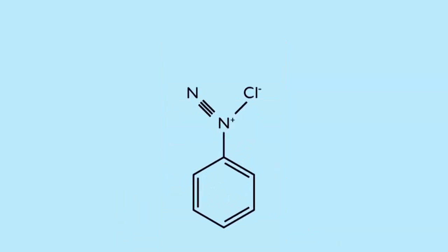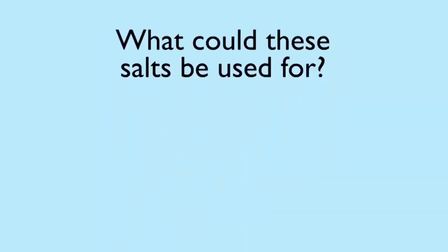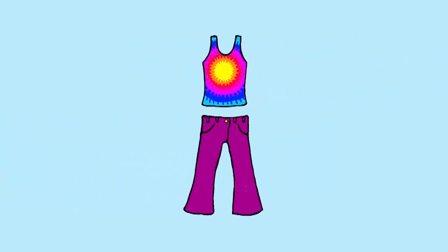Here's another more complicated salt with nitrogen in the cation. It's part of a family called the diazonium salts, which are all brightly colored. Can you think what they might be used for? Pause and have a think, then resume. The answer is, they're used for dye pigments to color our clothes.